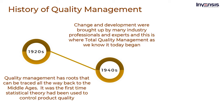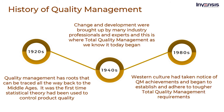Total quality management was also discovered in Japan during the 1940s. Japanese products were seen as low-quality knockoffs at the time. Japan enlisted the help of quality management gurus such as Deming and Juran after hearing about the success of quality management in the West. However, Western culture would eventually catch up. By the 1980s, Western culture had taken notice of Japan's achievements and began to establish and adhere to tougher total quality management requirements. However, it was unclear at the time exactly what TQM entailed. The goal of quality management has remained the same throughout history: to ensure that customers obtain an excellent, high-quality product.